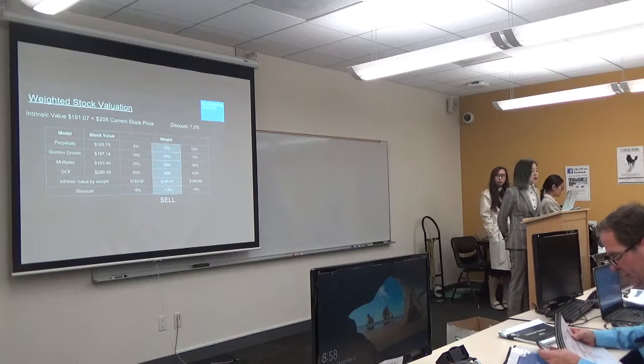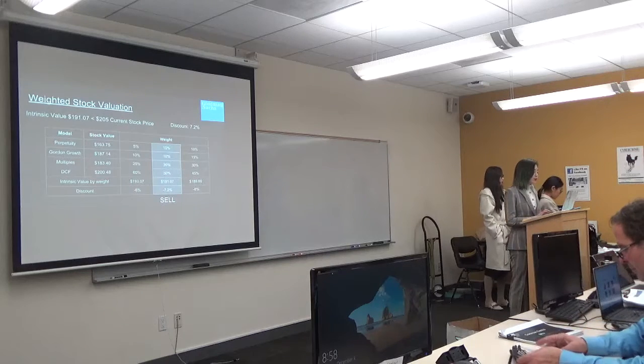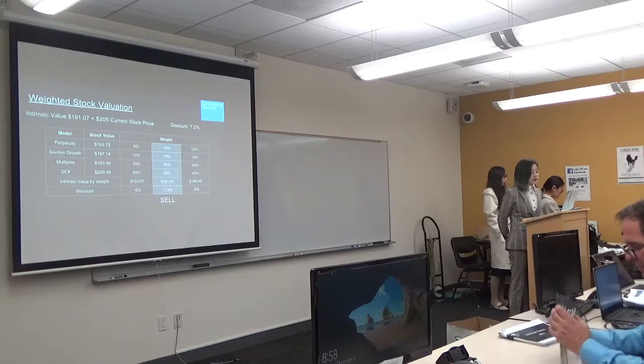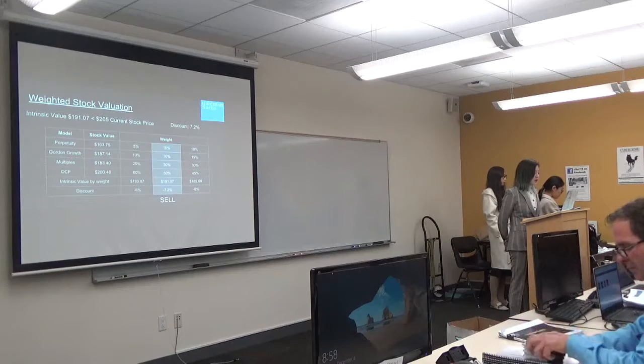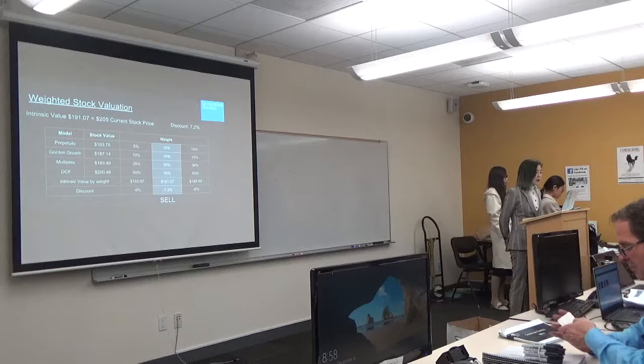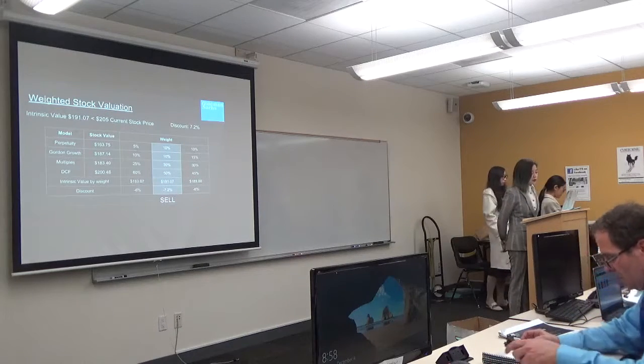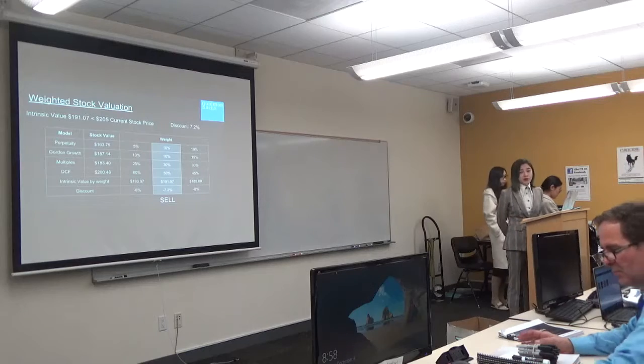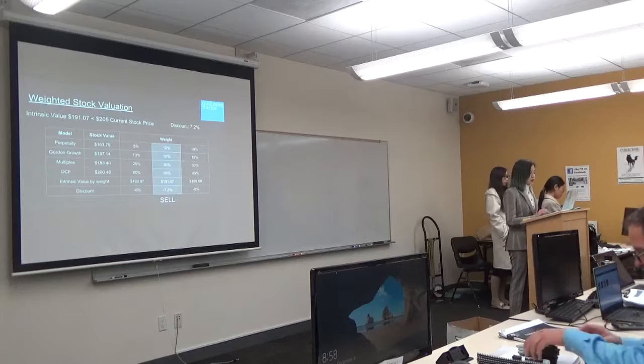On the weighted stock valuation, we got all of them, and the weights are 10%, 10%, 30%, 50%. The intrinsic value by weight is 191.07, almost 191.1 dollars, so the discount is 7.2%.